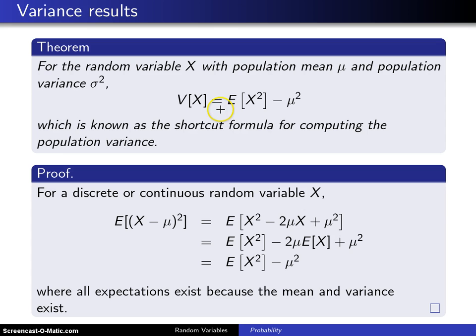then the variance of X can be written as the expected value of X² minus μ². And that is known as the shortcut formula for computing the population variance.